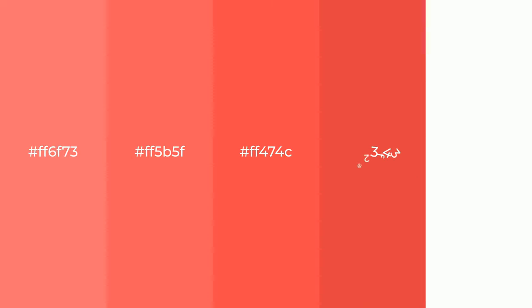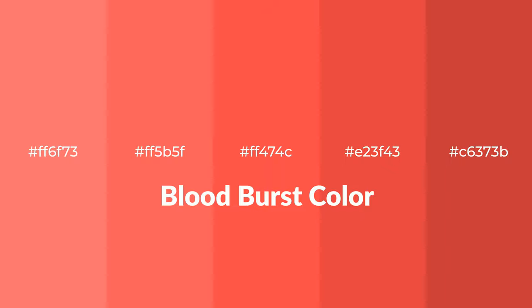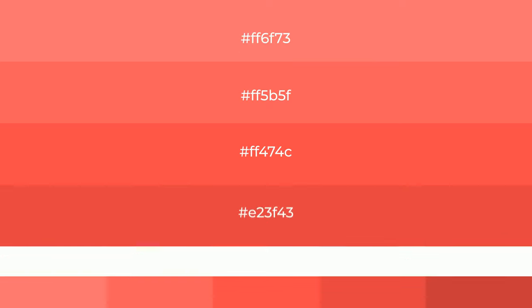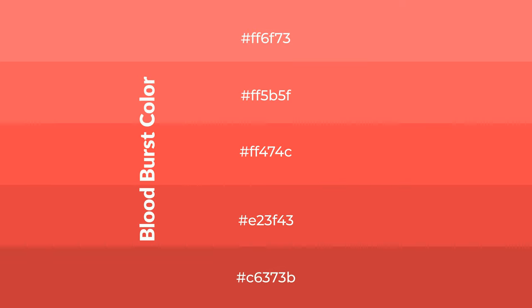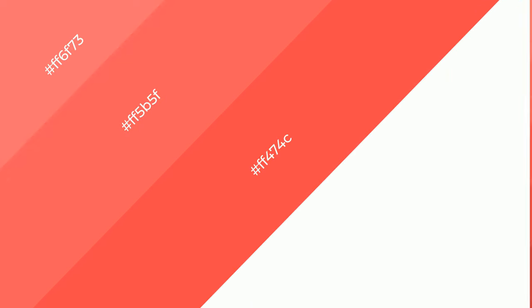Warm shades of Blood Burst color with an orange hue for your next project. To generate tints of a color, we add white to the color. Tints create light and exquisite emotions. To generate shades of a color, we add black to the color, and it is used in patterns, 3D effects, and layers. Shades create depth and drama.